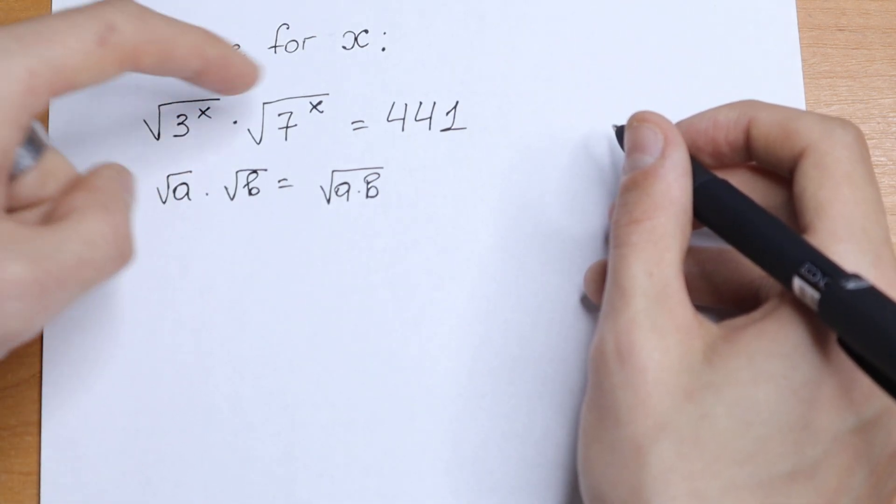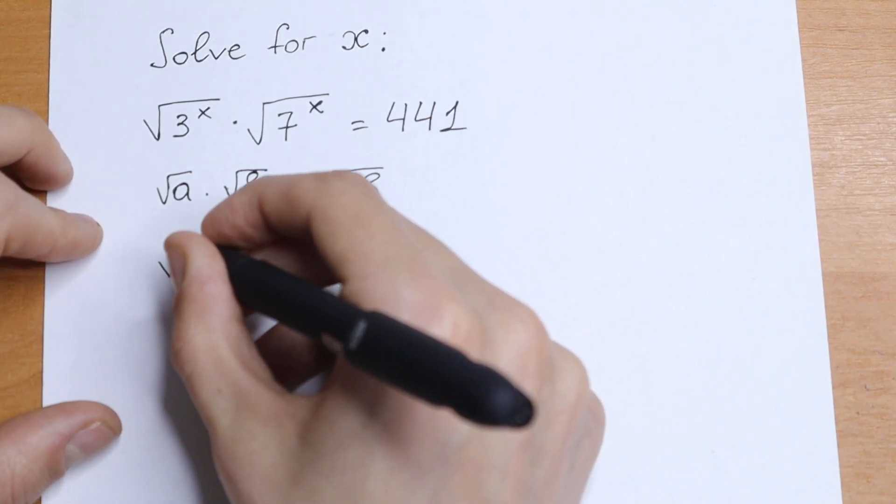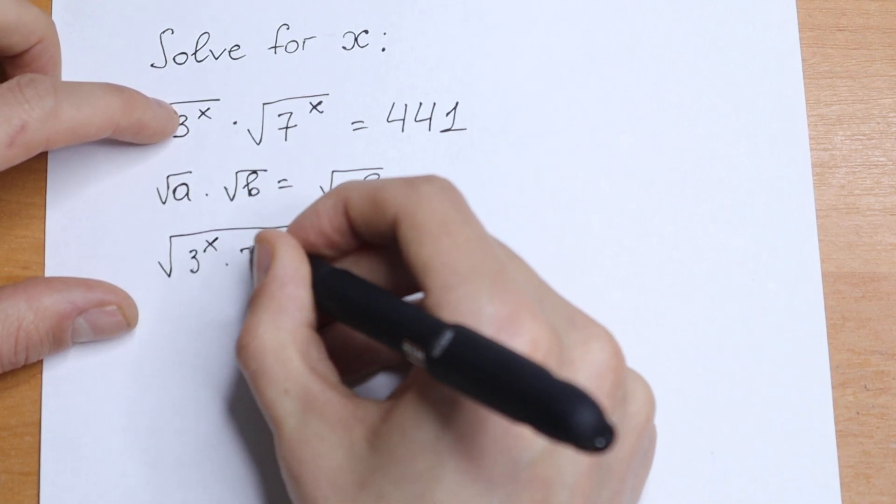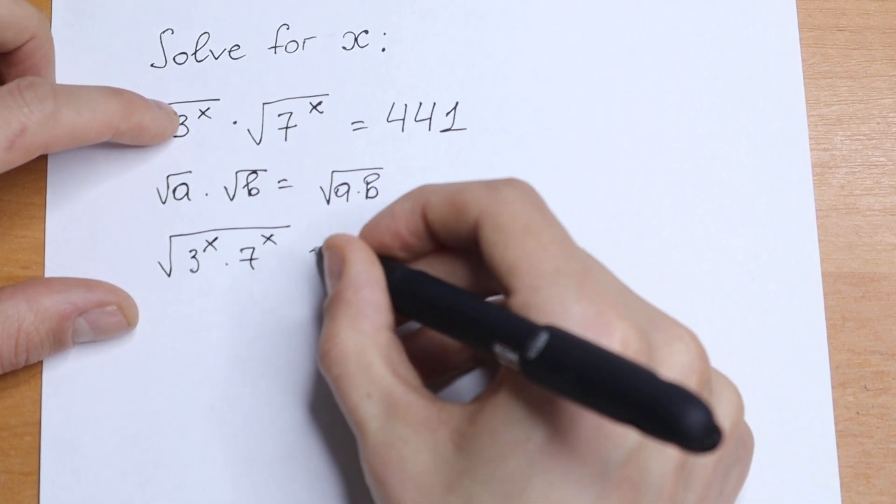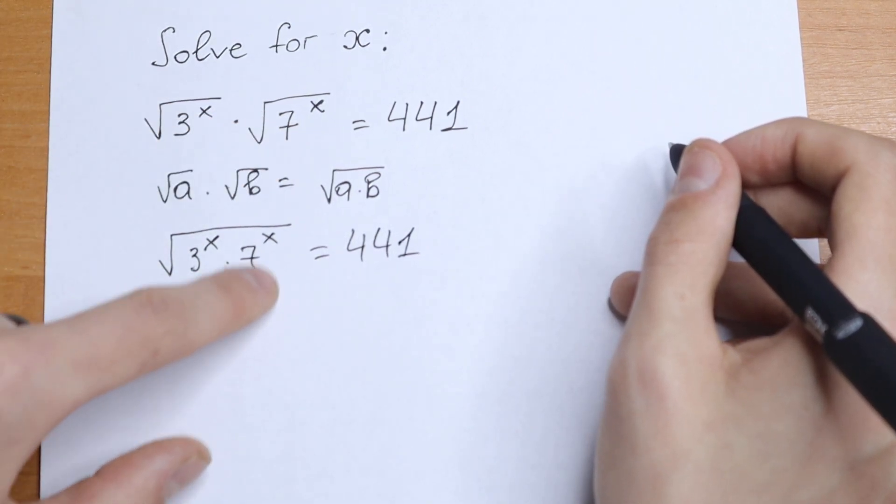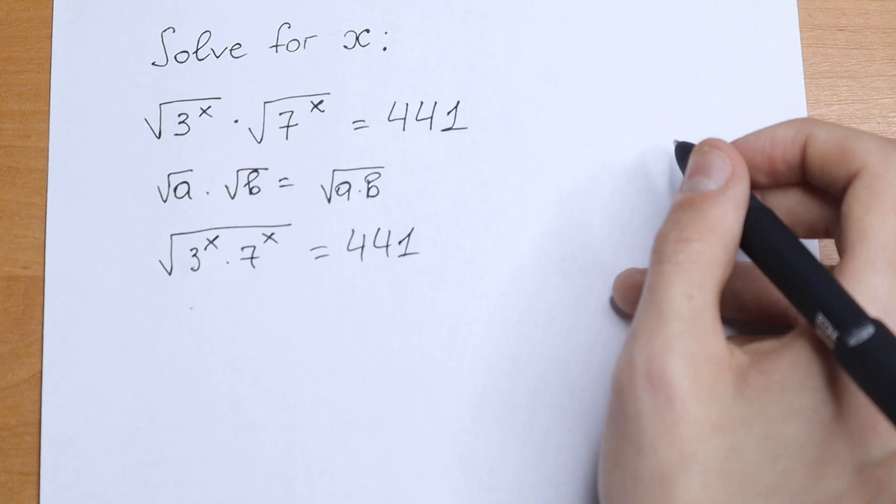Let's write this under one square root sign. So we have square root of 3 to the power x times square root of 7 to the x equal to 441. So writing these elements under one square root sign, what are we going to do next?